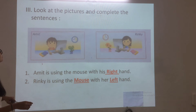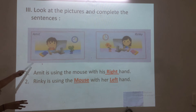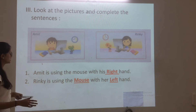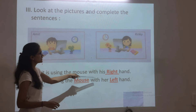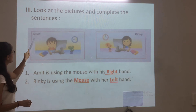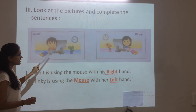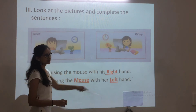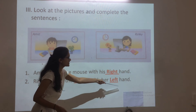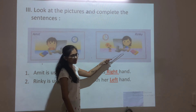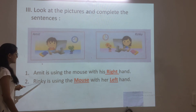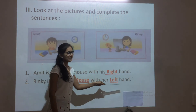Third section: look at the picture and complete the sentence. You have two pictures and you have to complete the sentence. Amit is using the mouse with his left hand.